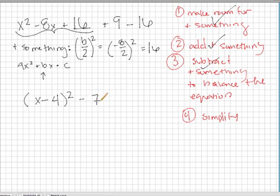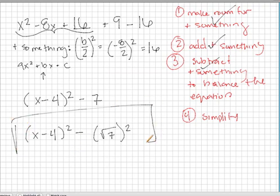So technically, what we really have going on here is x minus 4 squared minus the square root of 7 squared. So you can turn almost any quadratic equation into a difference of squares. So in that sense, we do have a difference of squares.